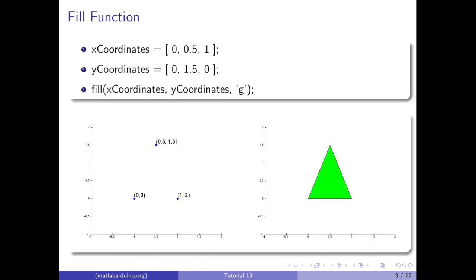The fill command takes an array of x-coordinates, y-coordinates, and a color. Here we can see a plot with the points that make up this triangle, and then the points in the fill command. If you want to use this triangle in the following code, use these coordinates shown here.